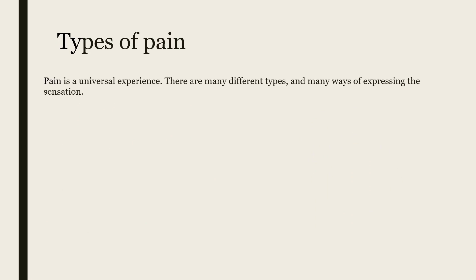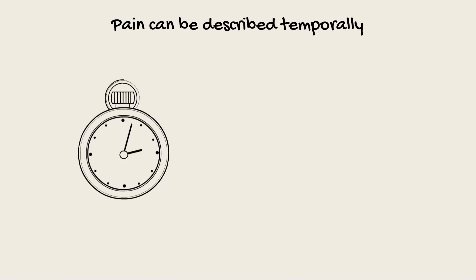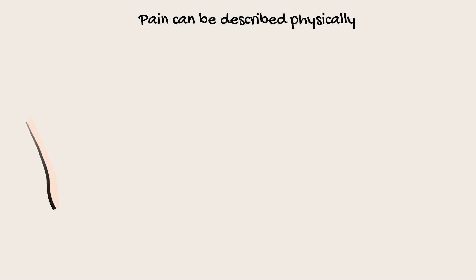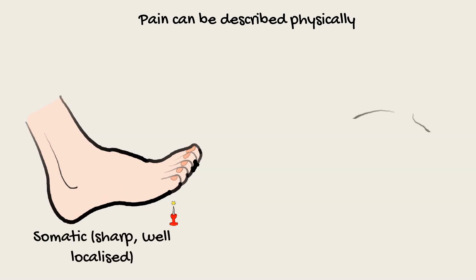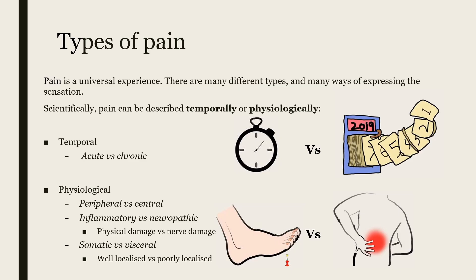Pain is a universal experience, but there are many different types of pain and many ways of expressing the sensation. The way pain is described scientifically can be considered either temporally or physiologically. In terms of temporal pain, you can have acute pain or short-term pain versus chronic pain or long-term pain. Physiologically, pain can be further subdivided: peripheral or central, inflammatory or neuropathic — physical damage compared to nervous damage — or somatic versus visceral, where somatic pain is sharp and well localized and visceral pain is more achy and poorly localized.